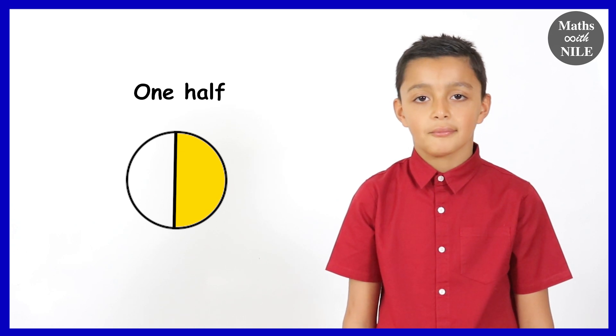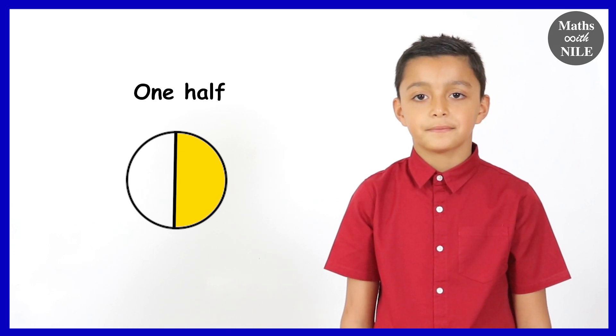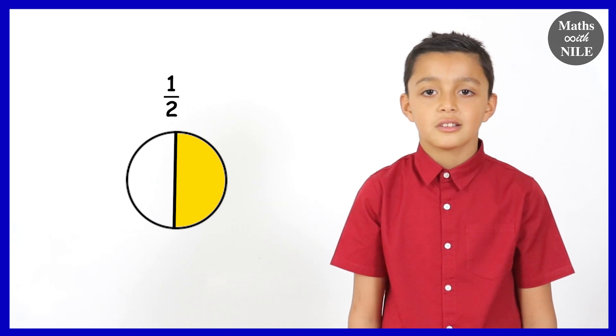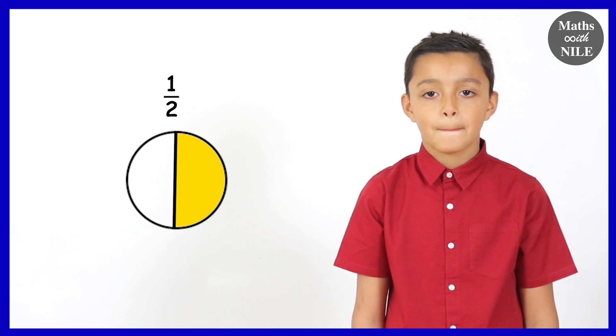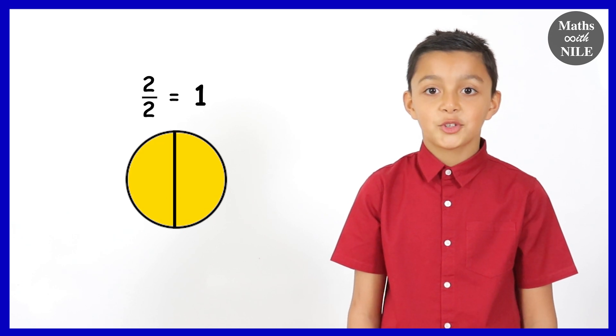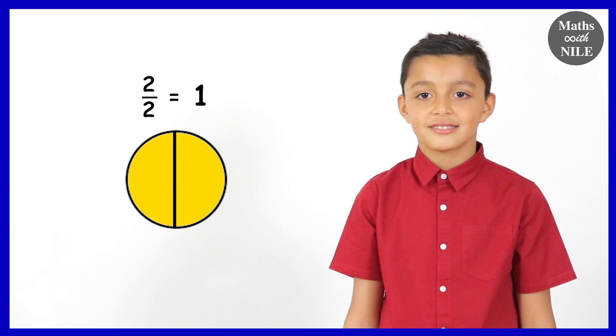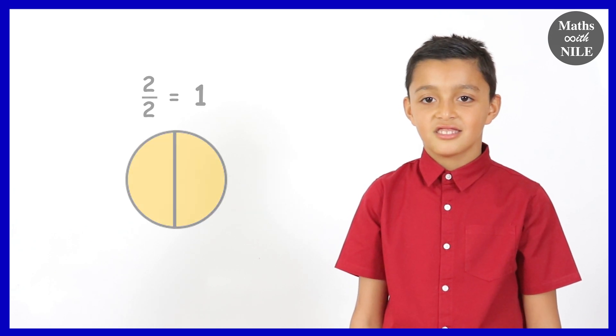And can you tell us, how do we write one half? One over two. One over two, so we can see that there. And just to be clear, how many halves do we have in the whole? Two. So we can put them together and we can see that these two halves make one whole. Good.